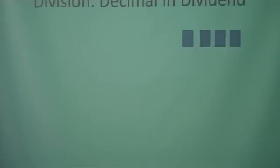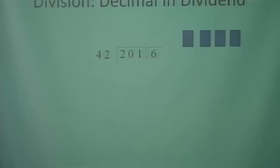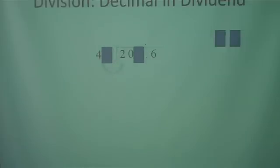This next one we're going to divide with a decimal in the dividend. The problem is 201.6 divided by 42. We're going to take the decimal and pop it straight up into our answer, then divide normally. Can 42 go into 2? No. Can 42 go into 20? No. So how many times can 42 go into 201? We're going to use our cover technique: cover the 2 and the 1, and ask how many times can 4 go into 20. Since it goes in exactly, we estimate the number right below, so we're going to try 4.